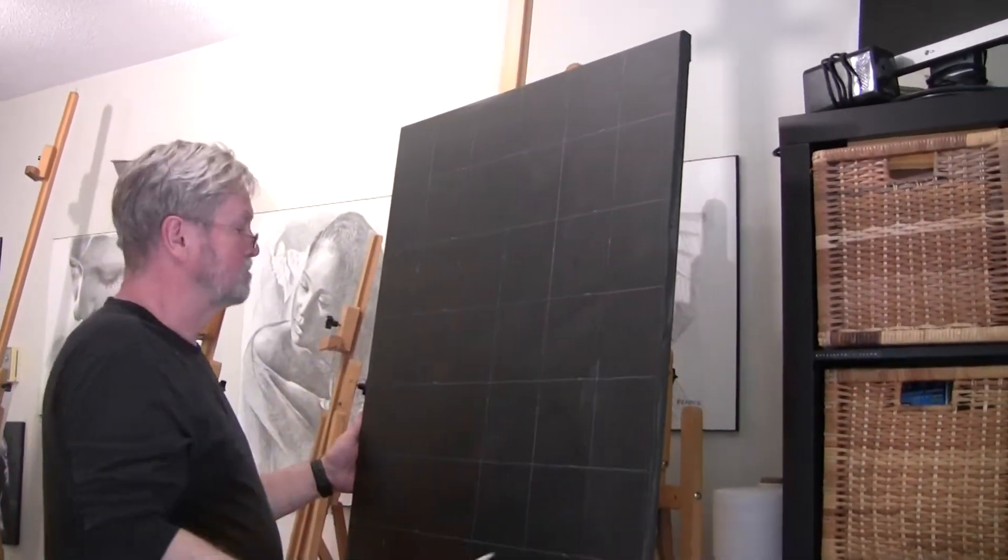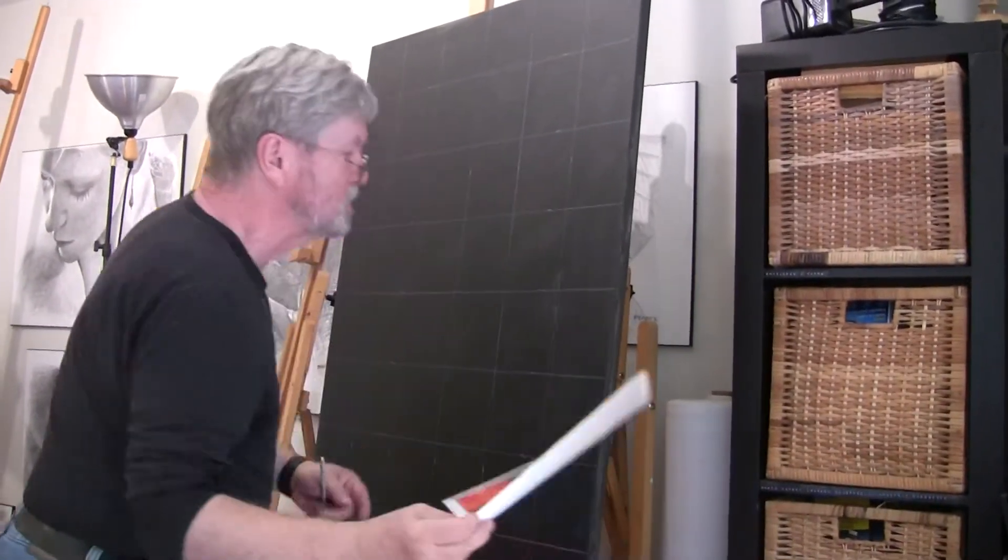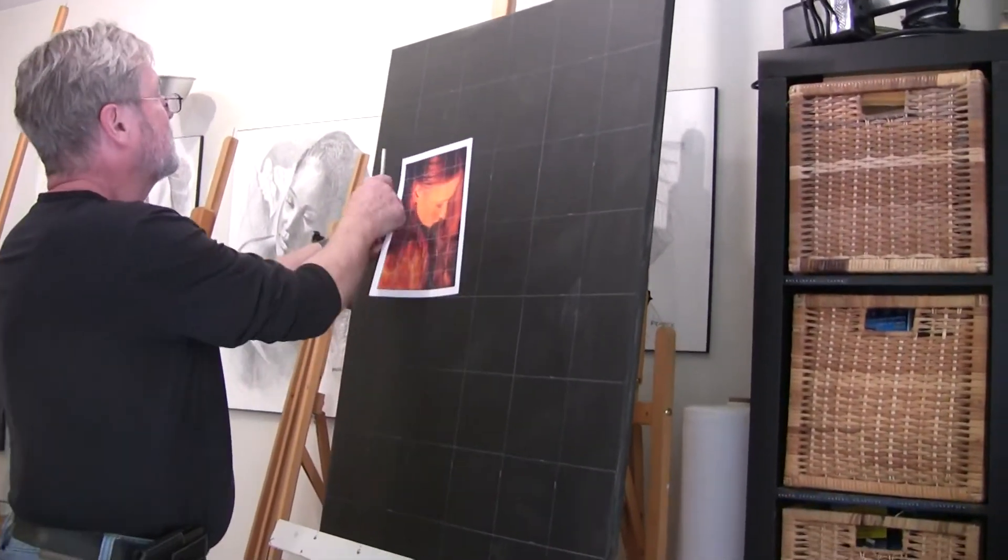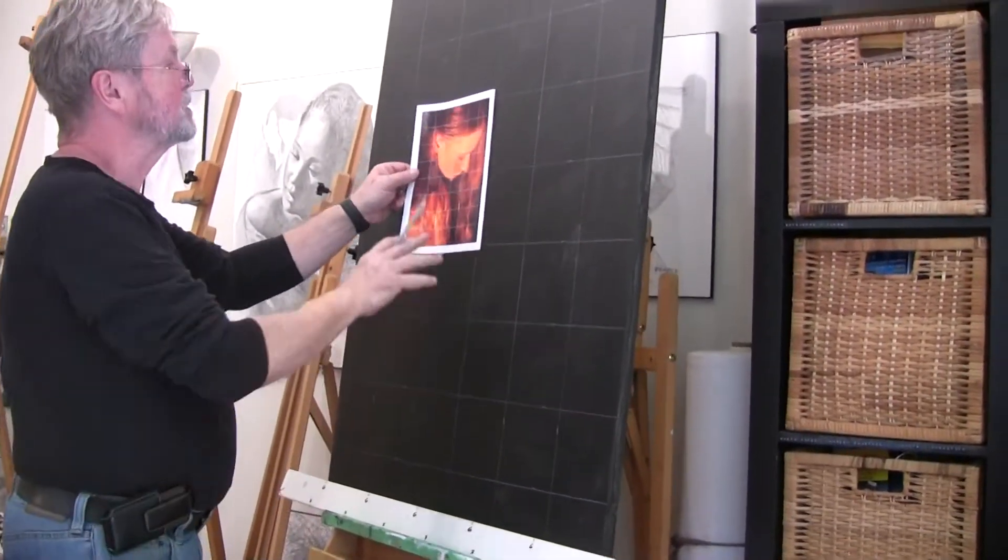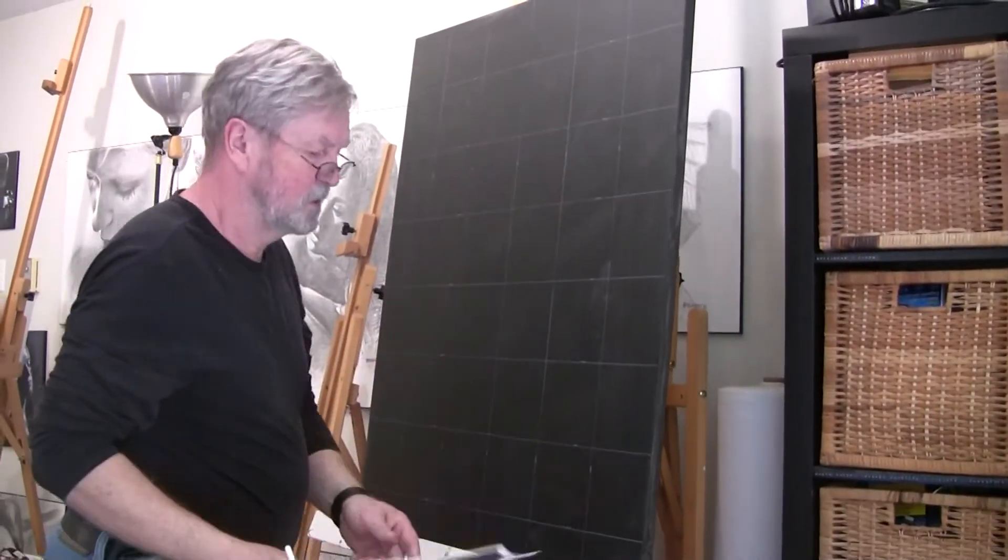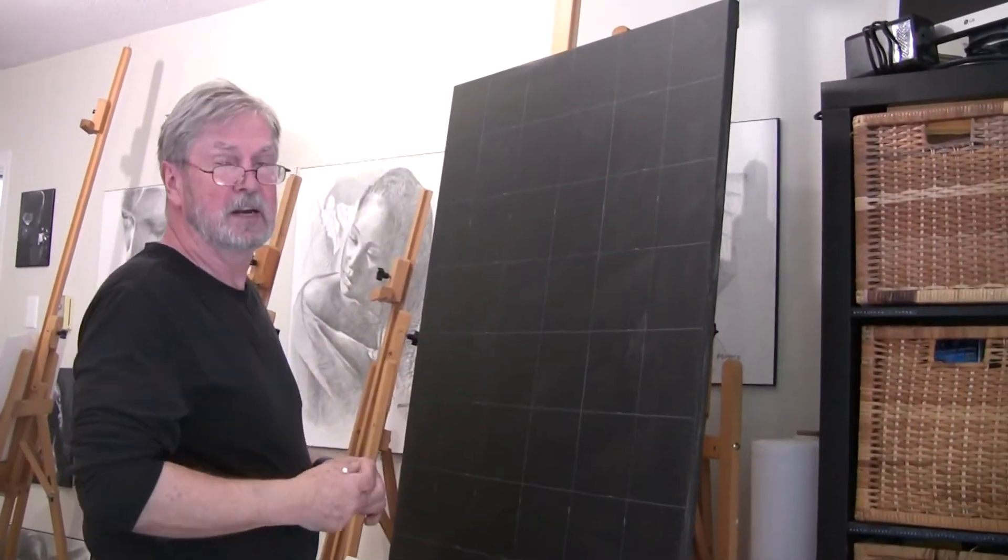So, this is a canvas gridded ready to draw the image. It's exactly the same number of grids, squares, as the image. So, we'll be able to use this to move the image up onto the canvas in the right place, in the right size. And we're going to show you that in our next video.